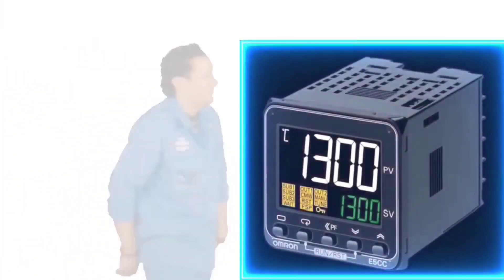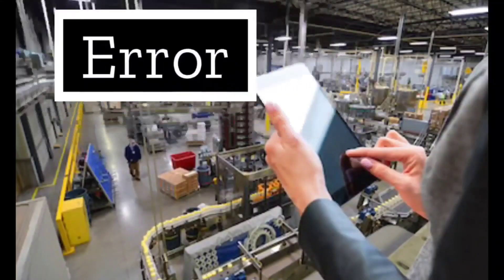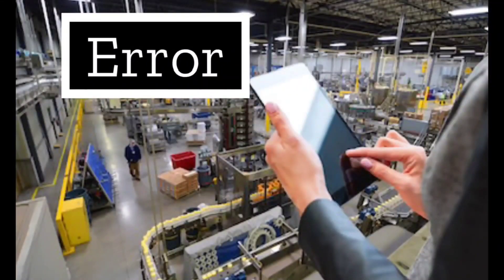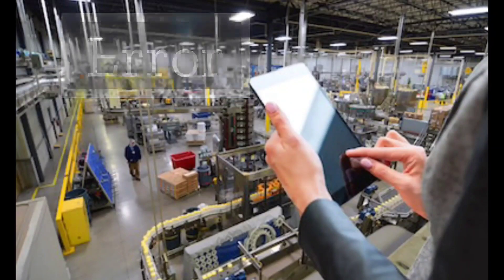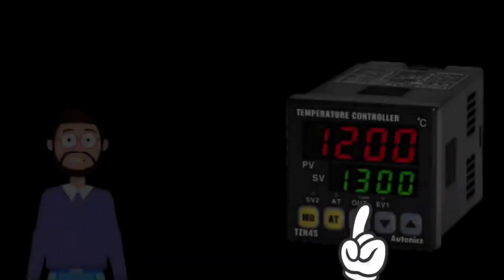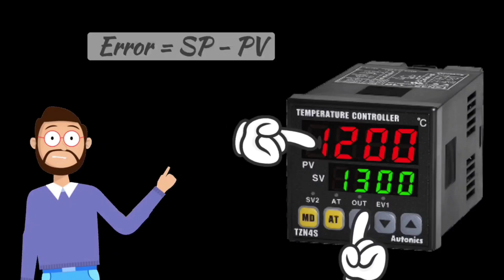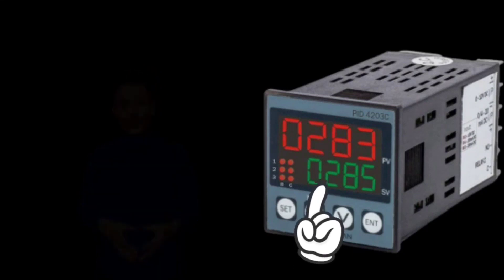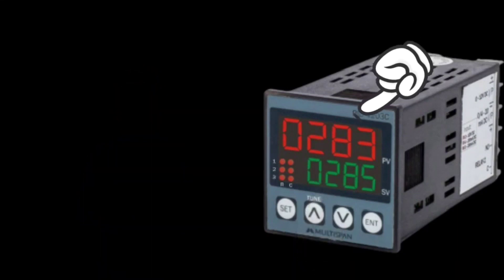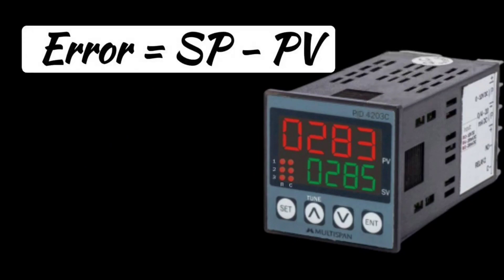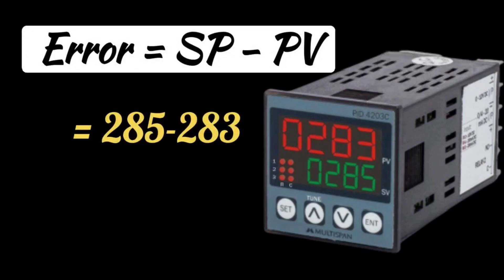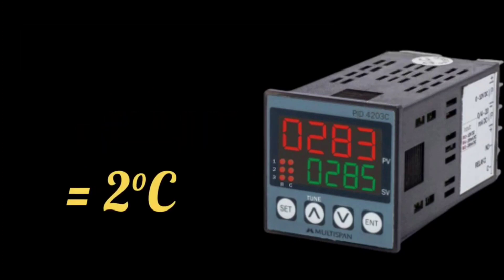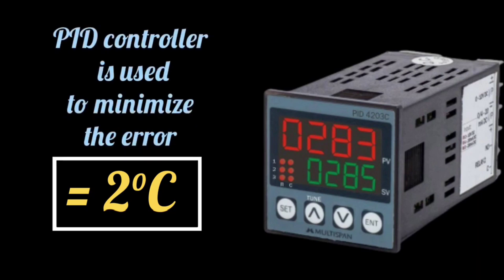Here you also need to understand the term 'error', because the whole concept is based on the error signal only. The difference between the set point and the process variable is the error. The PID controller is used to minimize or zero this error.